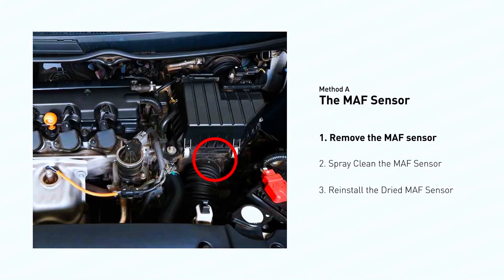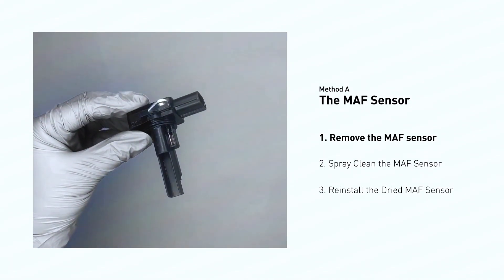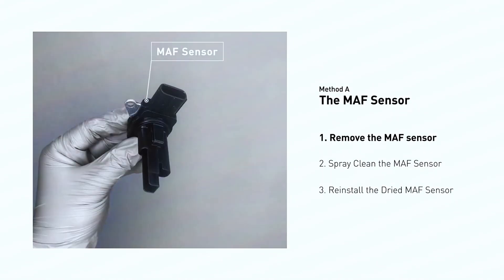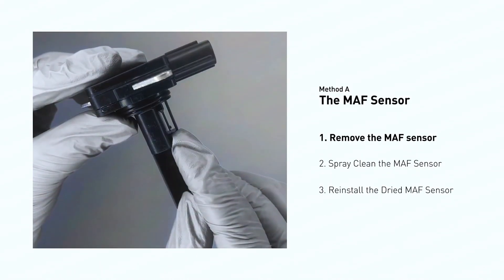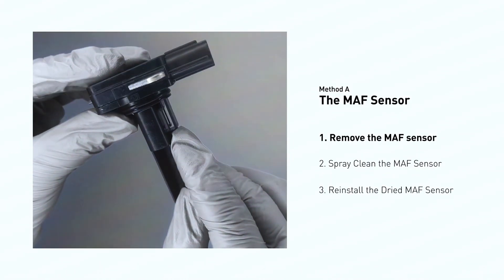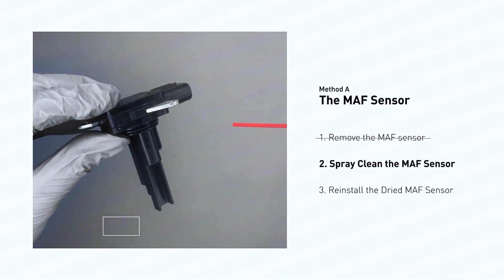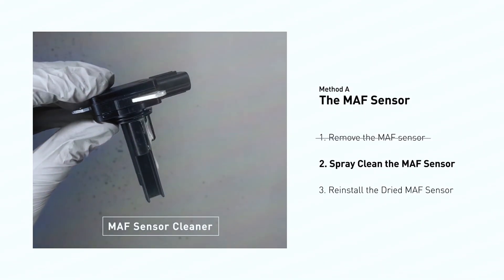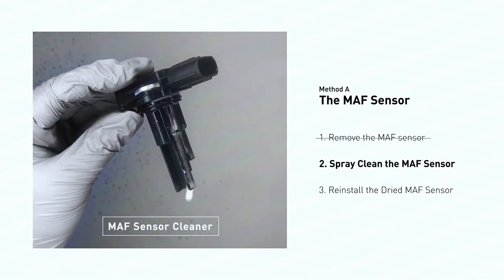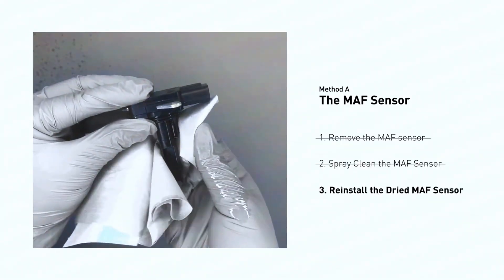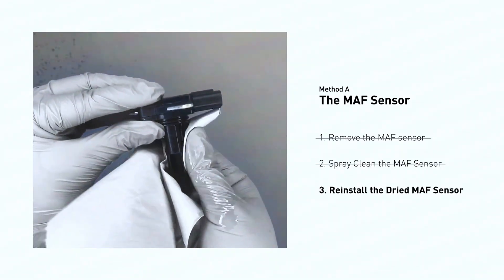MAF sensors are located between the air filter and the throttle body. Carefully remove the MAF sensor from your car and do a quick inspection around the wire — inside often gets dirty and needs to be cleaned. Spray MAF sensor cleaner onto the wire perpendicular to the ground so that it won't damage the MAF sensor, then reinstall it after it gets dry.